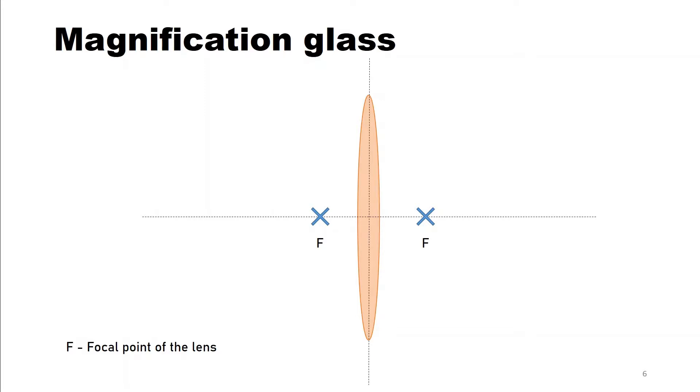For a magnification glass it is extremely important that the object is located in between the focal point and the lens. So we want the object to be placed for example here. And now let us draw the ray diagram again. First horizontal line to the optical axis and from there throughout the focal point. Then the second ray through the optical center.